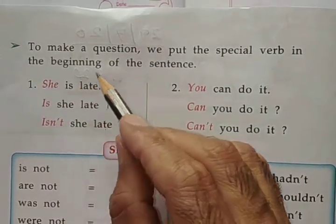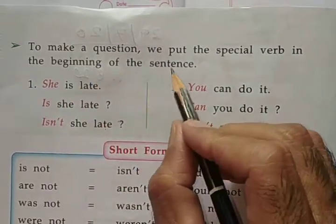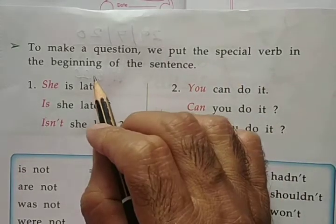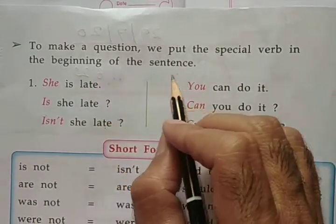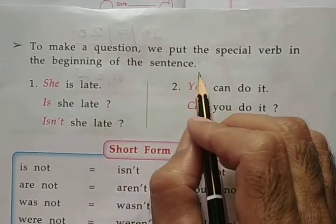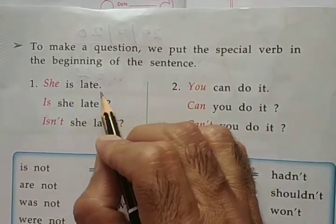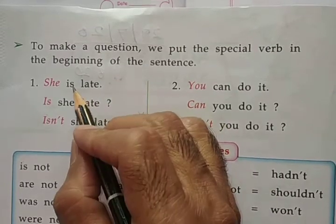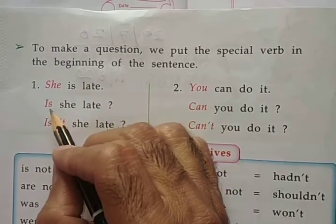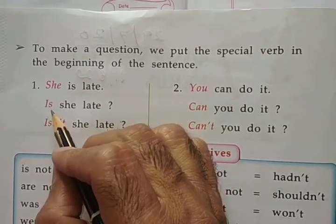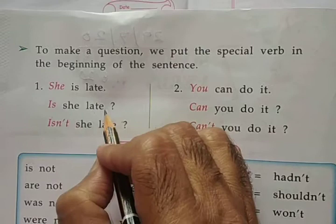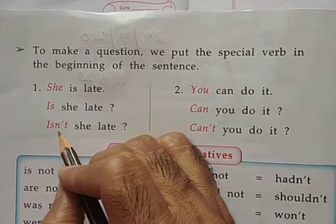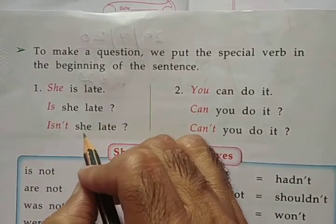To make a question, we put the special verb at the beginning of the sentence. For example: She is late. Is will come before she — Is she late? Is will become isn't — Isn't she late?